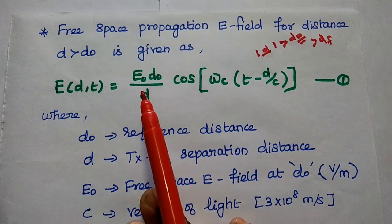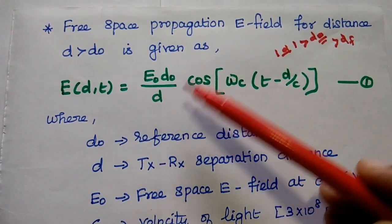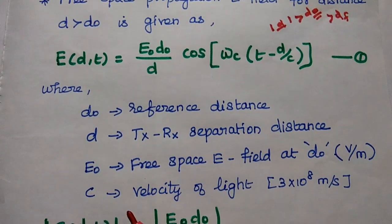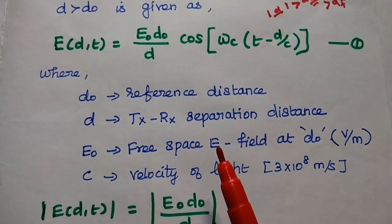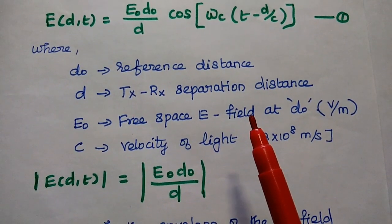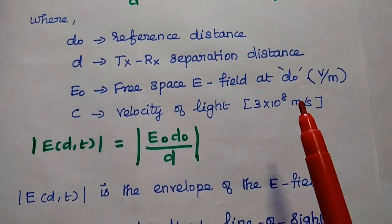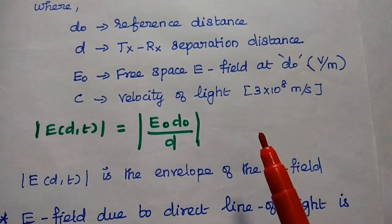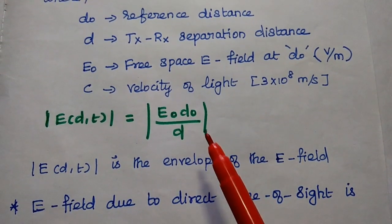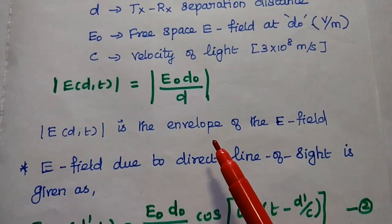The free space propagation electric field is: E(d, t) = E0 * d0/d * cos(omega_c * t - d/c), where the cosine term represents the phase of the signal. Here d-naught is the reference distance, which should be greater than the Fraunhofer distance; d is the distance between the transmitter and receiver, which should be greater than d-naught; E0 is the free space electric field at reference distance d-naught; and c is the velocity of light. Taking only the magnitude, the envelope of the electric field is |E(d, t)| = E0 * d0/d.